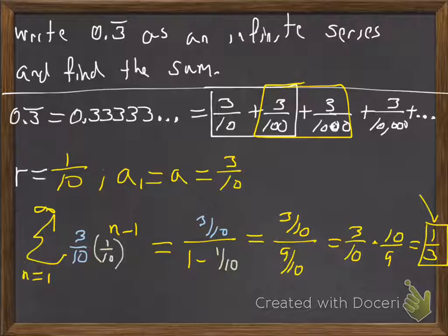And that's what we expect. Anyways, if you punch 1 third in your calculator, you're going to get 0.3 bar. So here's another way of looking at it as an infinite geometric series and finding that that infinite geometric series converges to 1 third.